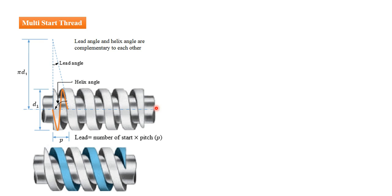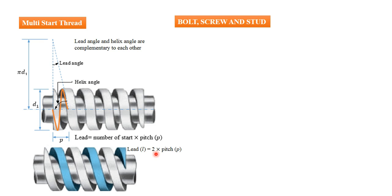In the case of a multi-start thread, a double-start thread is shown. In this case, the lead equals the number of starts multiplied by the pitch. So for a double-start thread, the lead is 2 multiplied by the pitch.